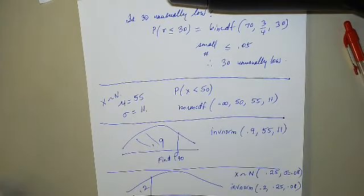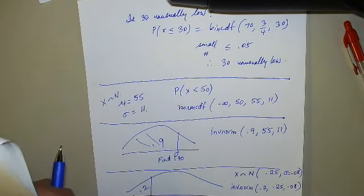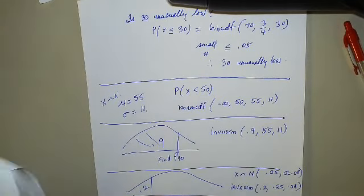And they want to know the 20th percentile. How should I do this? Right, invNorm 0.2, comma mu, comma sigma.